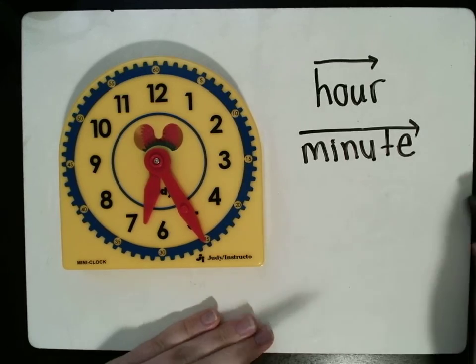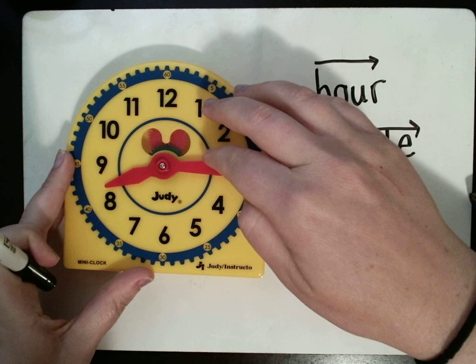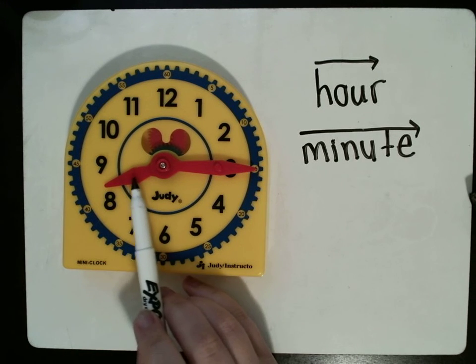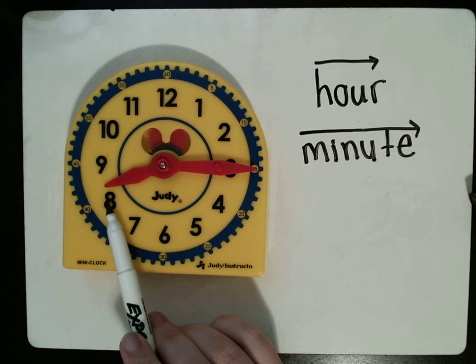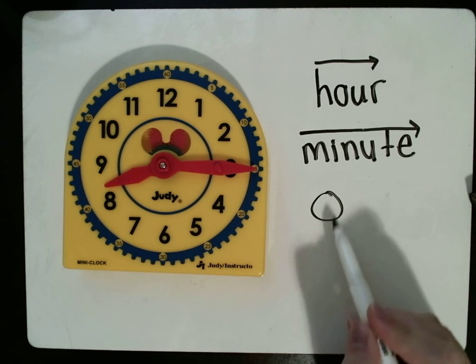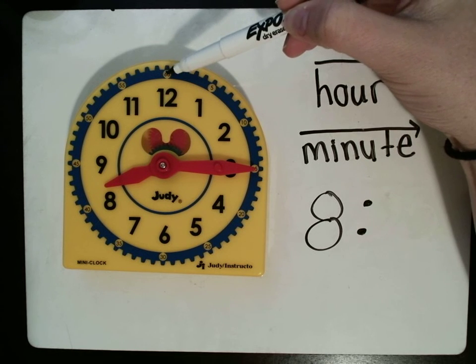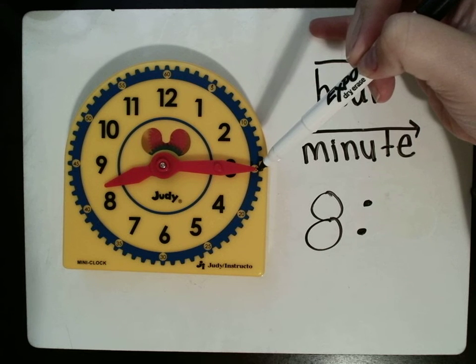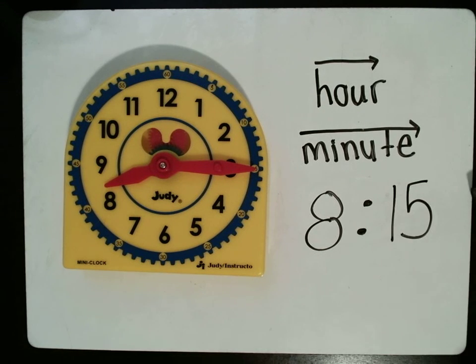Let's try another one. Let me move this around. Let's do this one. All right. Again, hour hand first. It's not at the 9 yet. So, it is still 8 is the hour. We have to look at the minute hand. 5, 10, 15. So, it is 8:15.